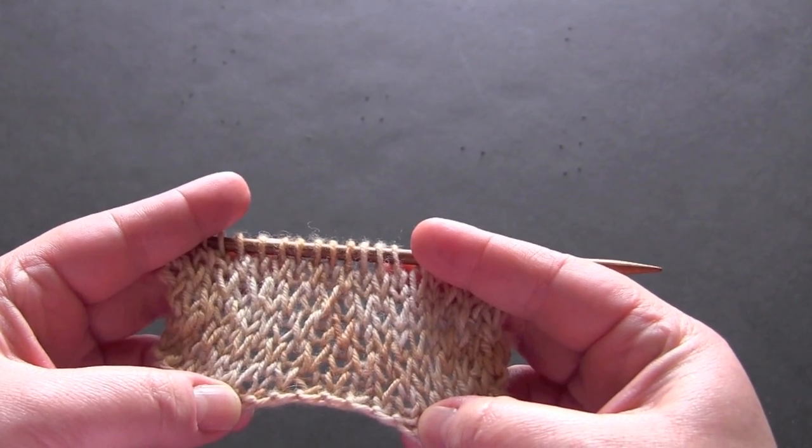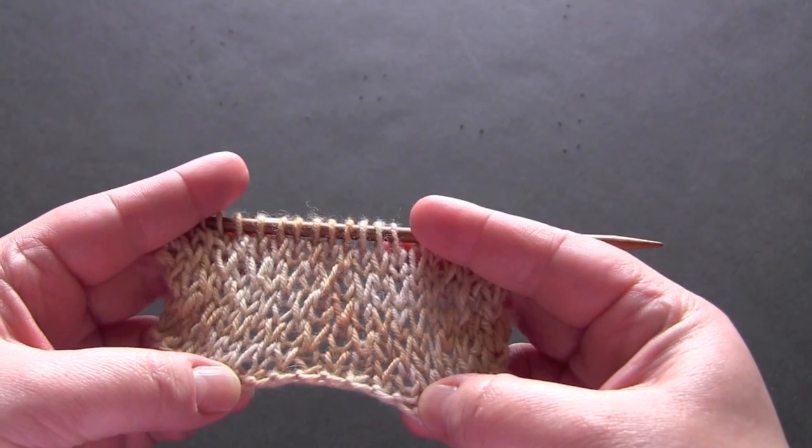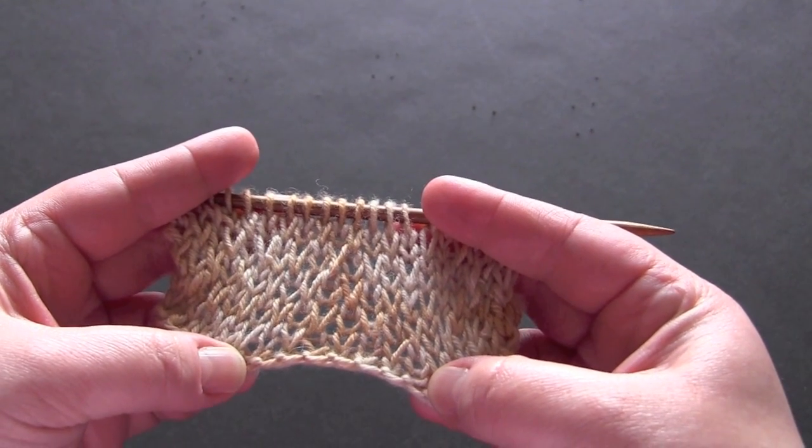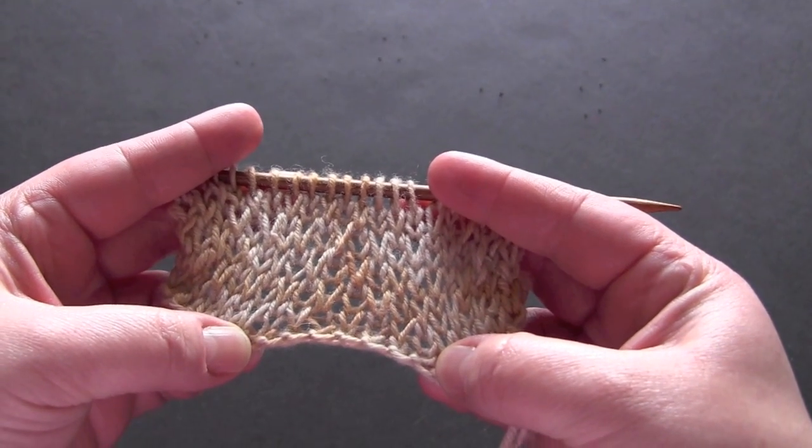This is a four row repeat worked on a multiple of two. For my sample, I have 22 stitches on DK weight yarn and I'm using US size 7 needles.